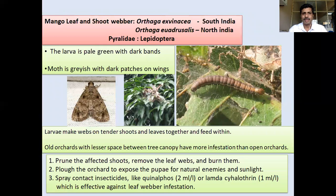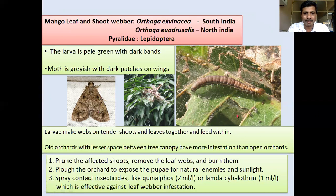Other pests found are the leaf and shoot webbers: Orthaga exvinacea and Orthaga euadrusalis, which belong to family Pyralidae. The larva is pale green with dark bands and the moth is grayish with dark patches on wings. The larva makes webs, tying tender shoots and leaves together and feeding within. You will find a lot of excreta and silken webbings within these holdings. Old orchards with less space between tree canopies show more infestation.